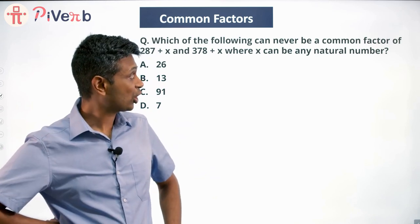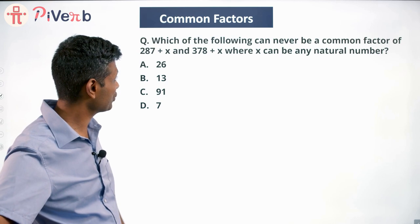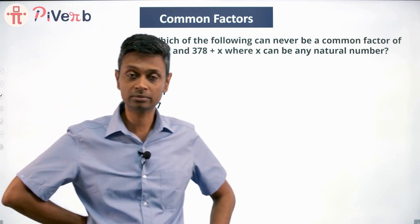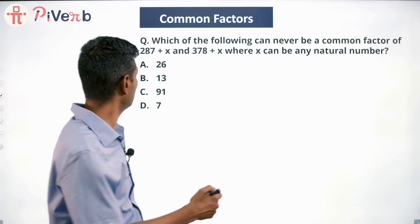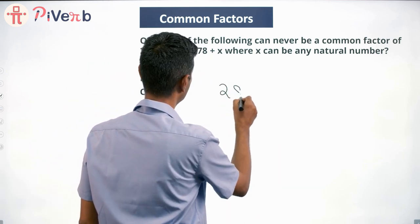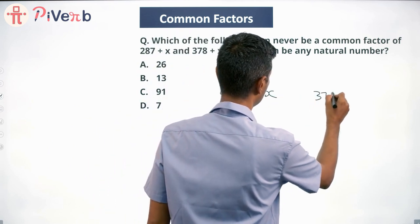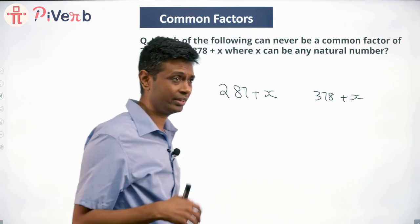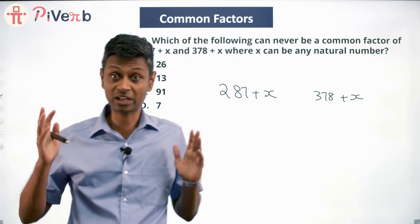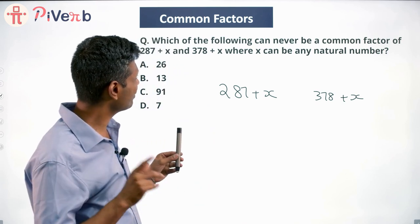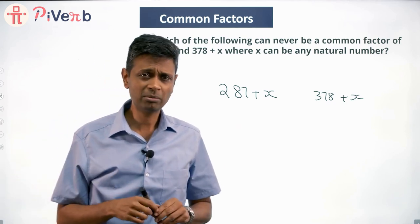Which of the following can never be a common factor of (287 + x) and (378 + x), where x can be any natural number? The question is not asking what x is — x can take any natural number — and then which of the following can never be a common factor of both of these? It's a very tricky question.